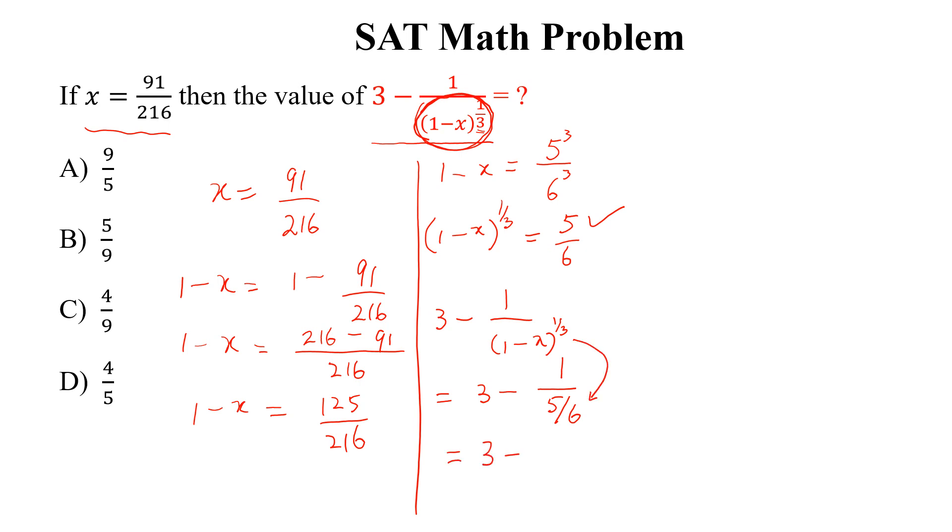We can write this as 3 minus 6 divided by 5. By taking the LCM, we can write 15 minus 6 divided by 5, and 15 minus 6 is 9. So 9/5.